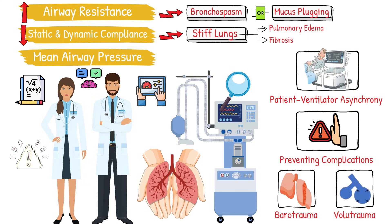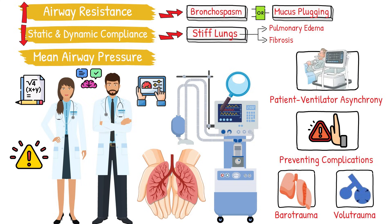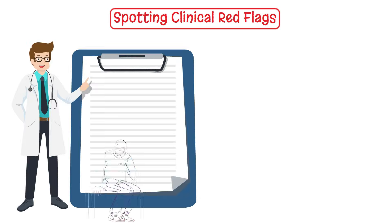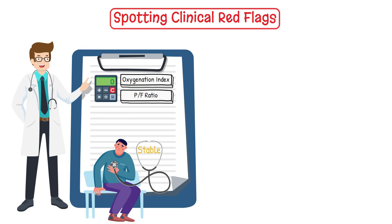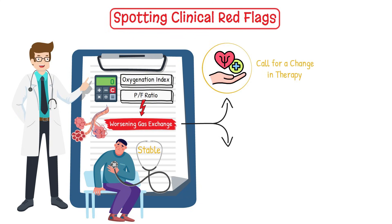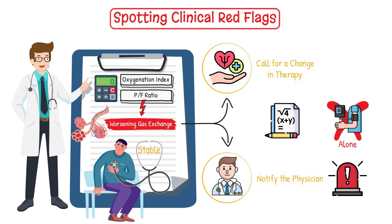Another reason calculations are so critical is that they enhance your ability to spot clinical red flags. Let's say you're working with a patient who appears stable, but when you calculate their oxygenation index or PF ratio, the numbers indicate worsening gas exchange. That single calculation could prompt you to call for a change in therapy or even notify the physician of a potential emergency.